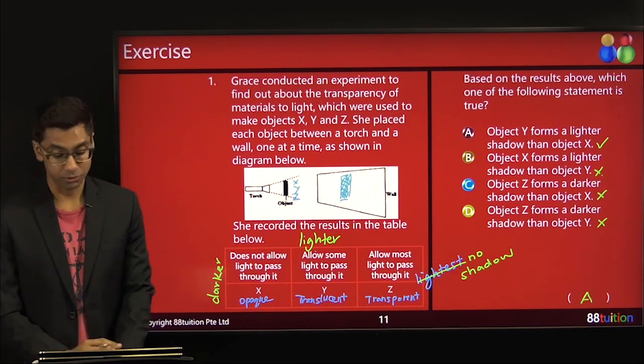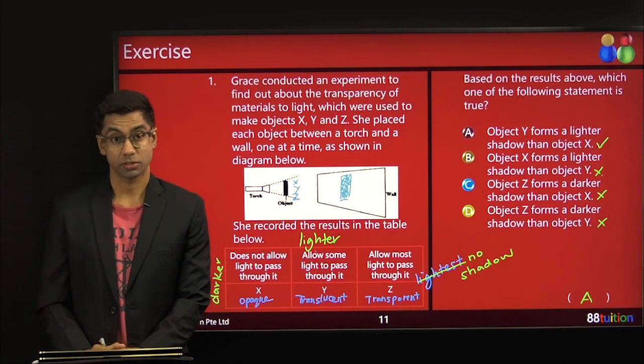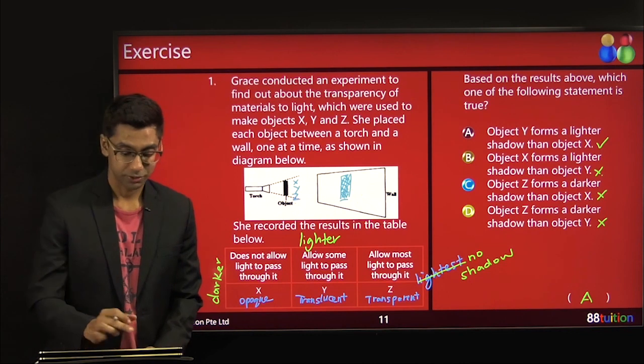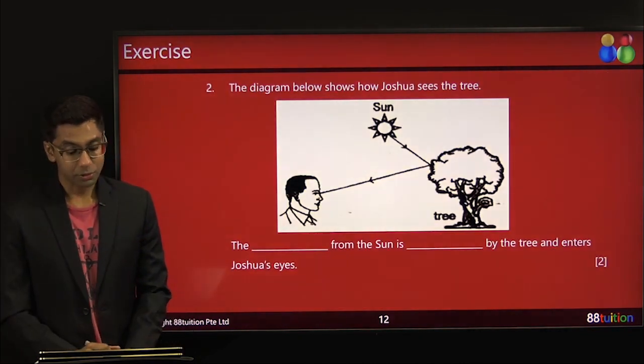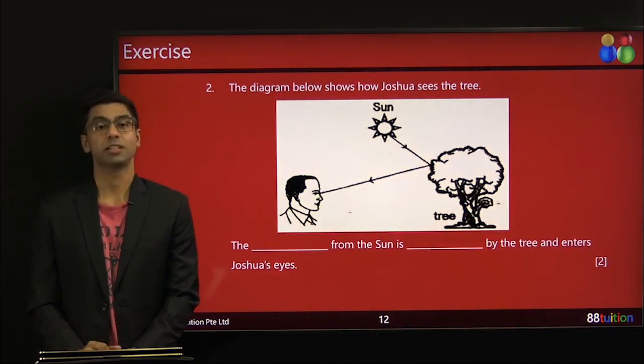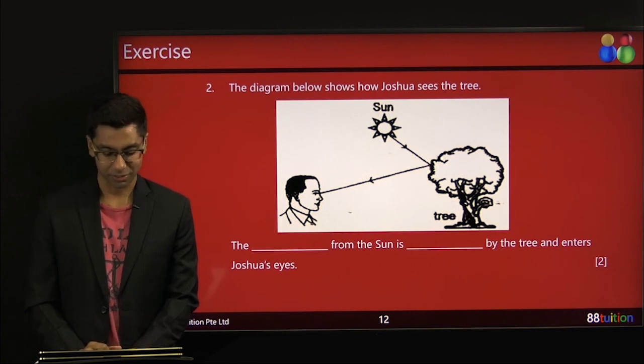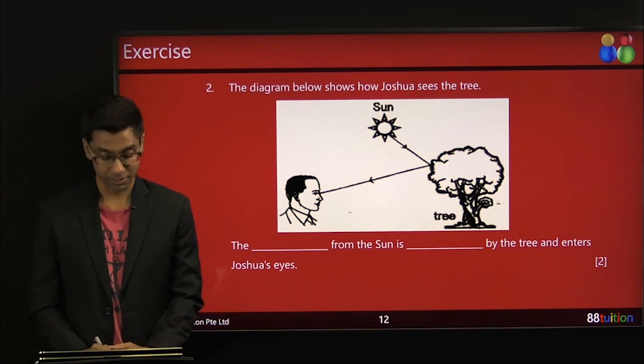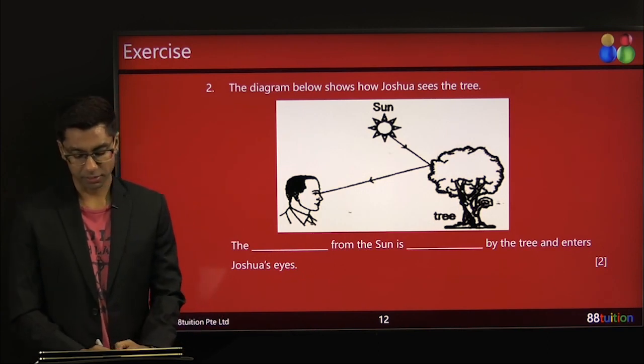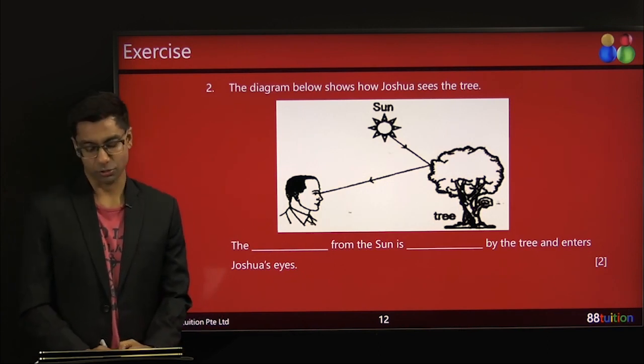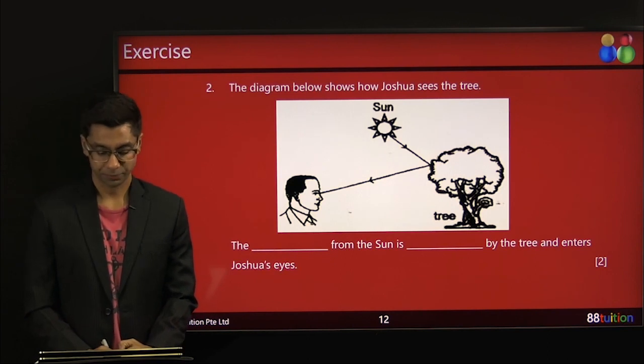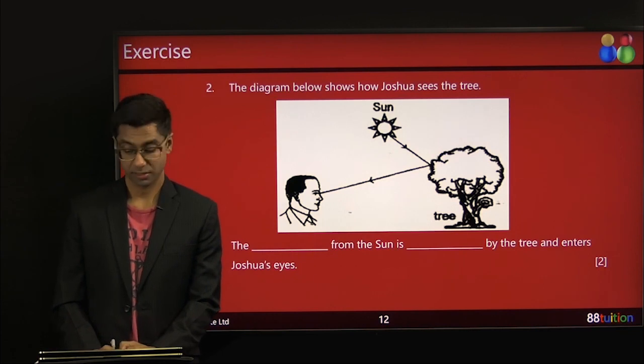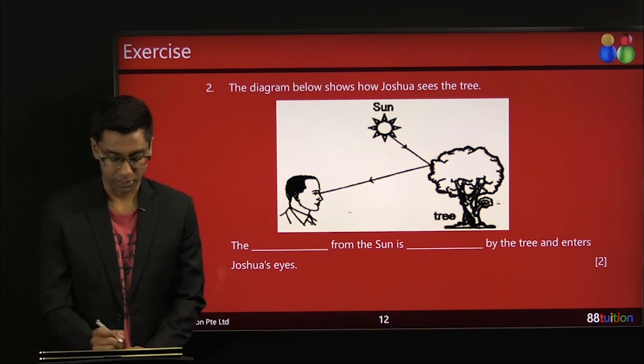Good that you guys managed to answer with me this question on shadows because that's what I'm going to cover in the next lesson. So it's like an intro. So the diagram below shows how Joshua sees the tree. Wow! This is easy. We covered this as a fundamental lesson in Light 1. Last lesson, right? The light from the sun is reflected by the tree and enters Joshua's eyes.